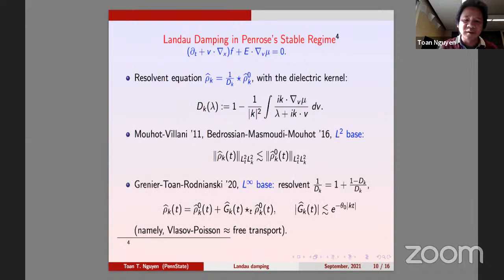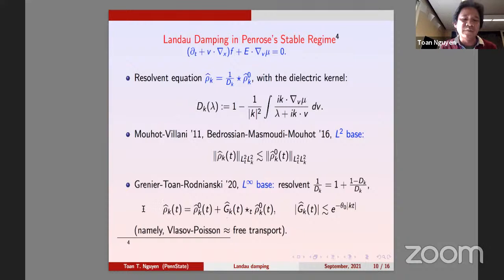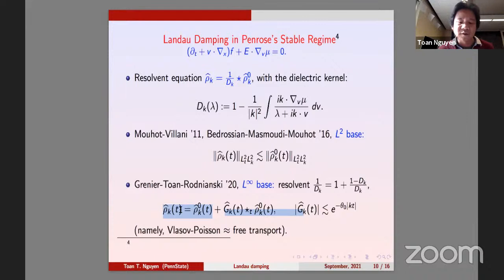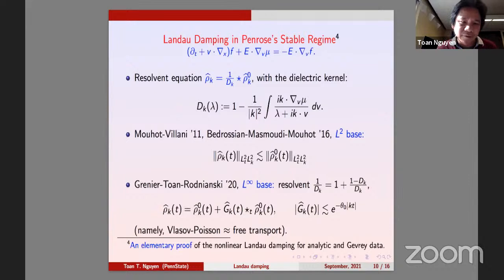We recently revisited this problem and expanded the resolvent one over D as one plus (one minus D) over D, obtaining pointwise representations. Precisely, the density of Vlasov-Poisson is approximately the density of the free transport — which decays exponentially for analytic data and polynomially for Sobolev data. Using these representations, together with Emmanuel Grenier and Igor Ryzhik, we gave a very simple proof of the nonlinear Landau damping result obtained earlier by Mouhot-Villani and Bedrossian-Masmoudi-Mouhot.